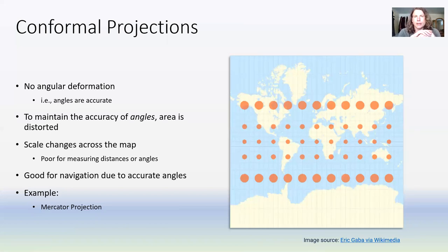With conformal projections, there's no angular deformation, so the shape of objects remains the same and you can use them for navigational purposes. That's part of the reason the Mercator projection was so revolutionary when it first came out. It maintains the accuracies of angles, so you can follow a constant bearing on a map when you navigate. But area is very severely distorted. The scale changes across the map, so these maps are not good for measuring distances. They're good for navigation, bad for measuring area.